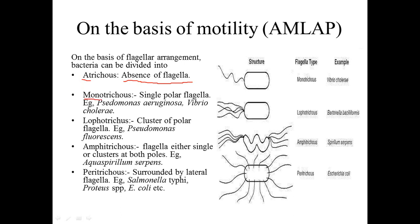Next is the Monotricus flagella. Monotricus means there is only a single flagella present at a polar end. Here you can see the polar part and the lateral part — in the polar end there is only one flagella. This arrangement is called Monotricus flagella.